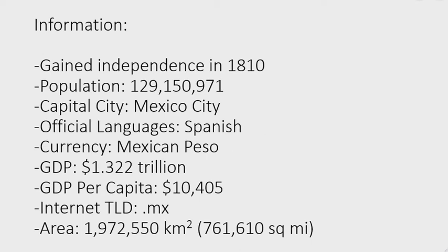First, some quick info. They gained independence in 1810, they have a population of 129,150,971, their capital city is Mexico City, their official language is Spanish, their currency is the Mexican Peso, they have a GDP of 1.322 trillion dollars, a GDP per capita of $10,405, their internet TLD is .MX, and they have an area of 1,972,550 square kilometers or 761,610 square miles. Anyways, let's get started.